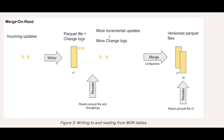Now let's explore MOR tables, also called Merge on Read. Merge on Read was the second storage table type created for Hudi to reduce write amplification in COW tables with heavy updates. Rather than rewriting the entire file, MOR writes the updates into separate changelog files. These changelogs are then merged into a new file version at a later time configured by the user, so grouping these smaller changelog files together avoids rewriting the entire file multiple times.